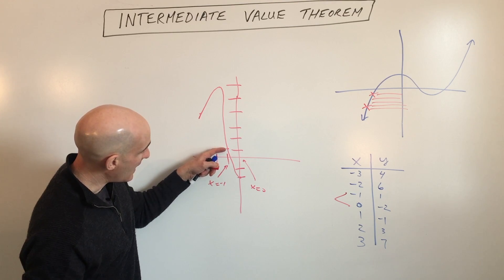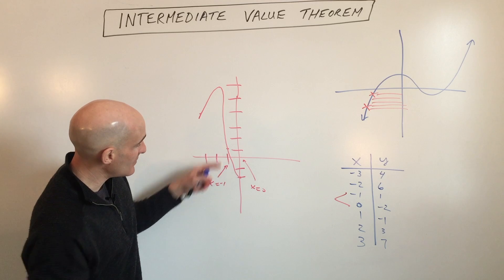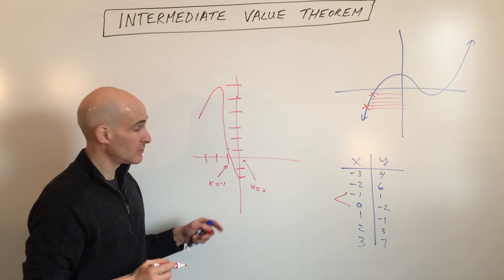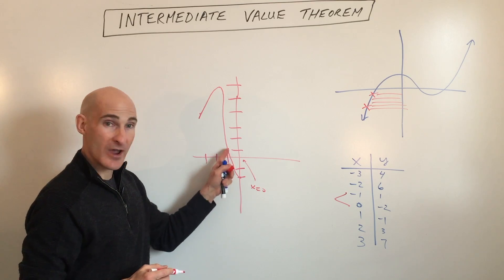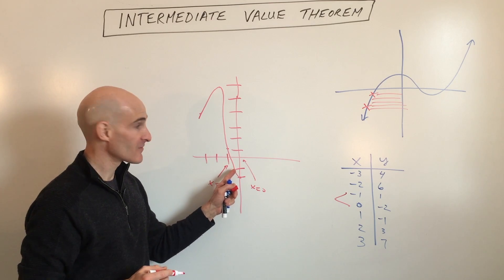The graph is going from positive to negative, so that means in between negative one and zero, there must be a zero, meaning an X intercept. The graph has to cross the X axis.